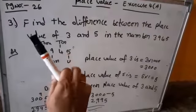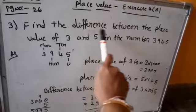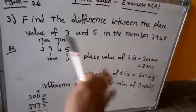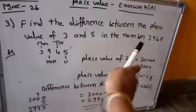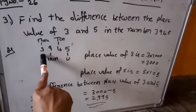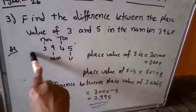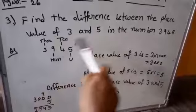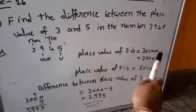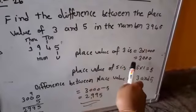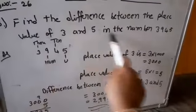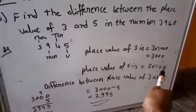What do we have to find first? Place value of 3. Where is 3 in this number? 3 is in the thousands place. That's why the place value of 3 is equal to 3 into 1000, which is 3000. So the place value of 3 is 3000.